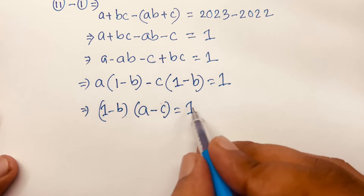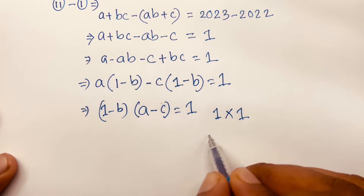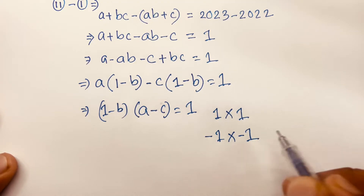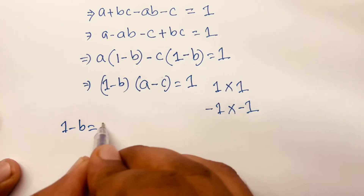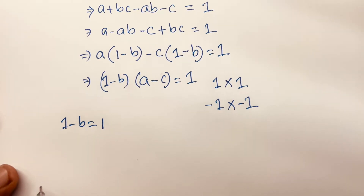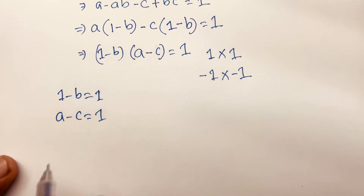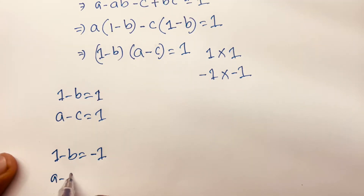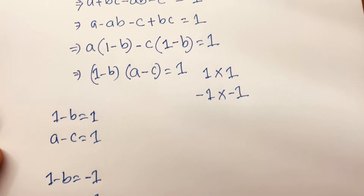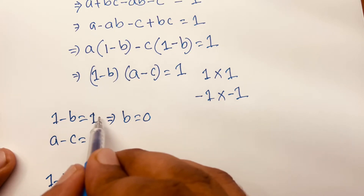Now I can see this factors as 1 times 1 and the other factor as minus 1 times minus 1. So in case one, 1 minus B is equal to 1 and A minus C is equal to 1. In case two, 1 minus B is equal to minus 1 and A minus C is equal to minus 1.